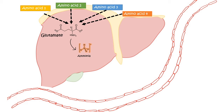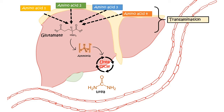From glutamate, ammonia is generated and alpha-ketoglutarate is a side product. This ammonia is extremely harmful and toxic, so it is converted into a less harmful form — urea — which is then excreted. The conversion of amino acids to glutamate is known as transamination, where amino acids donate their amine group. The generation of ammonia from glutamate is known as deamination.